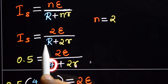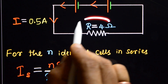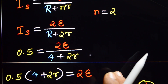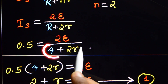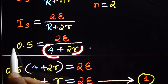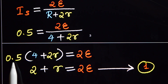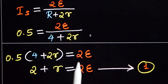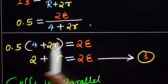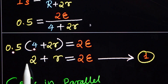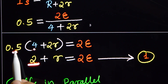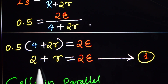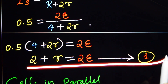Here, 4 is the resistance of the external resistor, that is 4 ohm. Cross-multiplying: 4 plus 2r is equal to 2 into E. So 0.5 into 4 is 2, and 0.5 into 2r gives us: 2 plus r equals 2E. This is our equation number 1.